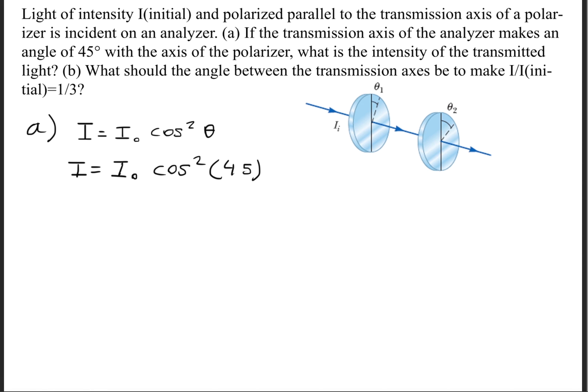We'll go ahead and plug in the given information, and we were told that the angle theta is 45 degrees. So we'll get that the intensity is one-half the initial intensity. For part b,